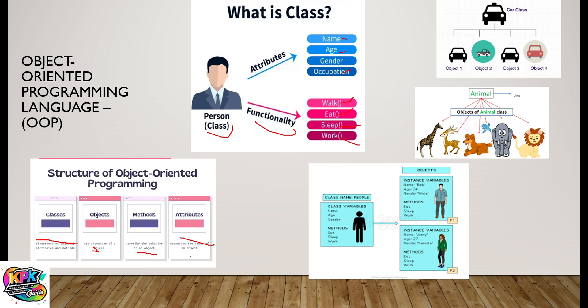So an object here becomes an instance of a person. We could have a person called Joe. Joe as a person has attributes and functionality, based on the blueprint of what the person class defines.